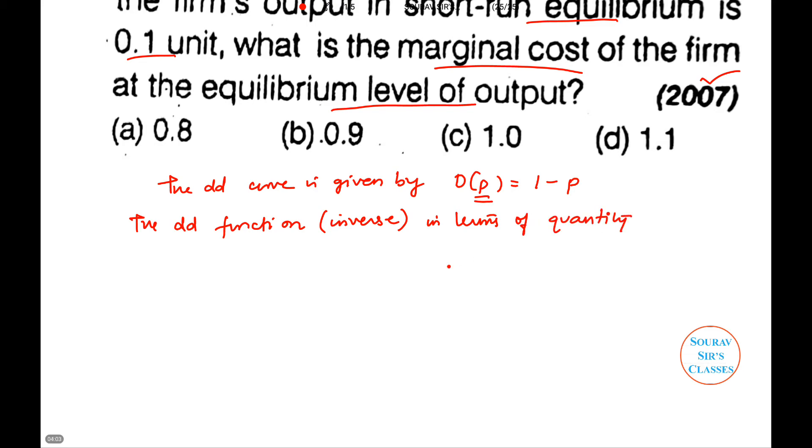It will be p is equal to 1 - q. Now total revenue TR is equal to p into q, so p is 1 - q, so we'll get 1 - q times q, which is q - q².